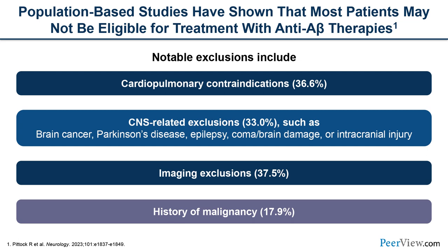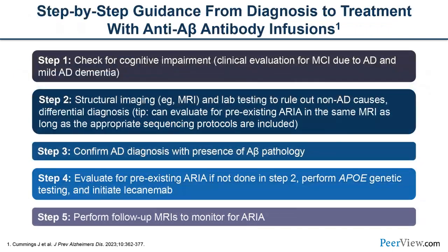A step-by-step guidance: first, check for cognitive impairment and determine if it is MCI due to AD or mild AD. Get structural imaging and routine labs to rule out non-Alzheimer causes. Develop a differential diagnosis. Then confirm amyloid pathology via biomarker. Evaluate for pre-existing ARIA. Recommend APOE genotyping for informed discussion about side-effect risk. Initiate disease modifying therapy. Perform follow-up MRIs to monitor for ARIA.